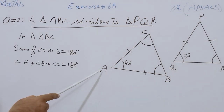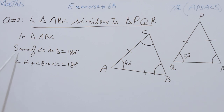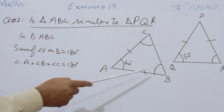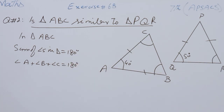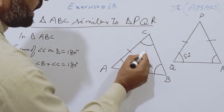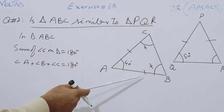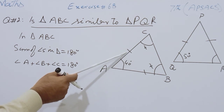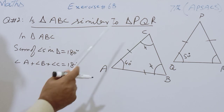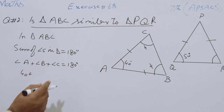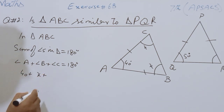First we will discuss Triangle ABC and apply the formula: sum of angles in a triangle is equal to 180 degrees. So Angle A plus Angle B plus Angle C equals 180 degrees. Angle B and Angle C are congruent, so we will suppose these two angles are X, because if two sides of a triangle are congruent, their opposite angles are also congruent. So Angle A is 40 degrees.